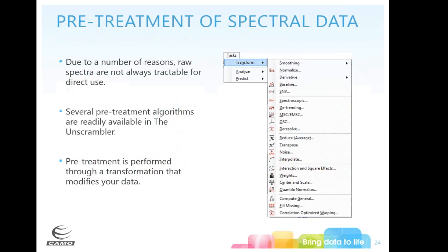In the Unscrambler, we have lots of types of pretreatments. The top box with smoothing, normalize, and baseline are used most often. The next box has more complex spectroscopic pretreatments. If you are collecting in transmission mode, you can convert to absorbance mode — same with reflectance — and there is an ATR correction under the spectroscopic options as well.